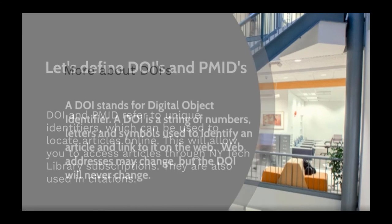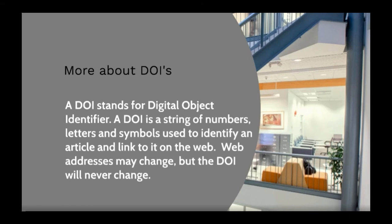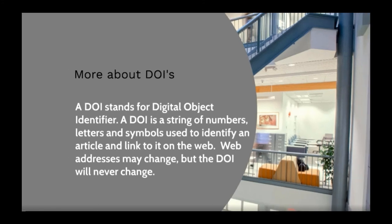A DOI stands for Digital Object Identifier. A DOI is a string of numbers, letters, and symbols used to identify an article and link to it on the web. Web addresses may change, but the DOI will never change.